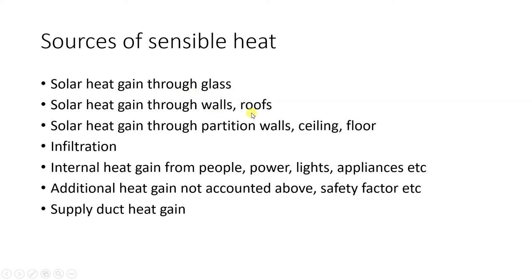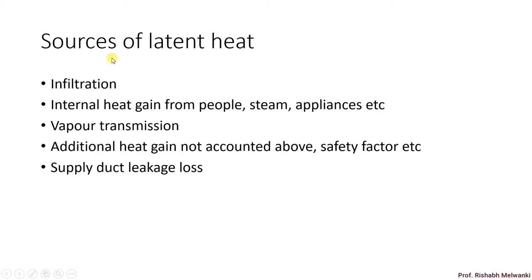Sources of sensible heat include glass, wall, roof, partition wall, ceiling floor, infiltration, and internal heat gain from people, power, lights, appliances, and additional heat gain using a safety factor. Sources of latent heat include moisture content. For human beings there will be perspiration and sweating. Infiltration air will also have moisture content. If steam is present due to some process, that steam will form the latent heat load, along with vapor transmission.